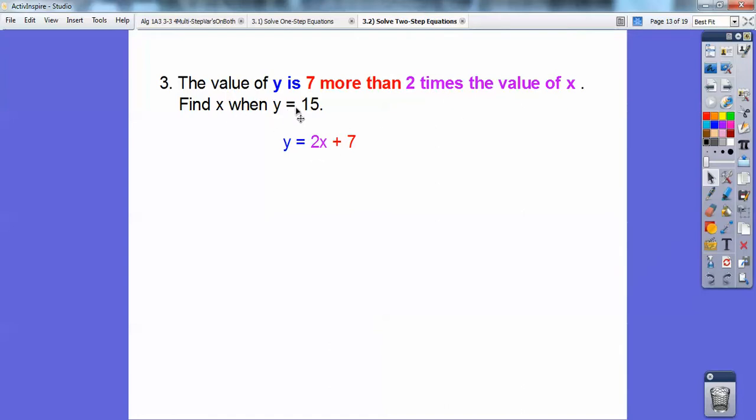All right, so now I'm going to plug in y equals 15 right there and solve for x. So here we go, I'm going to plug in 15, subtract 7 from both sides. 15 minus 7 is 8, and 2 goes into 8 four times, so the answer is 4.